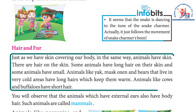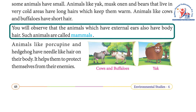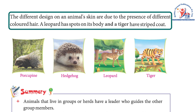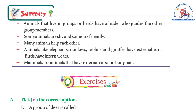Just as we have skin covering our body, animals also have skin with hair on it. Some animals have long hair and some have short hair. Animals like yak, musk oxen, and bears that live in very cold areas have long hairs to keep them warm. Animals like cows and buffaloes have short hair. Animals that have external ears also have body hair — such animals are called mammals. Animals like porcupines and hedgehogs have needle-like hair on their body to protect themselves from enemies. The different designs on an animal's skin are due to different colored hair — a leopard has spots and a tiger has a striped coat.